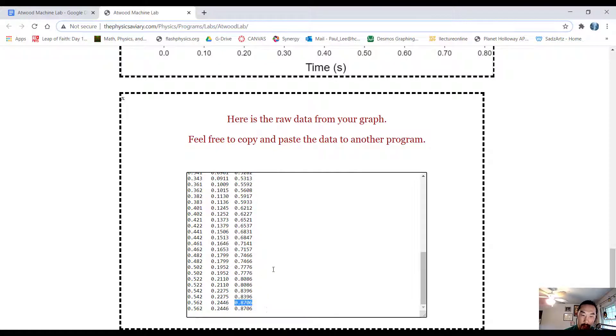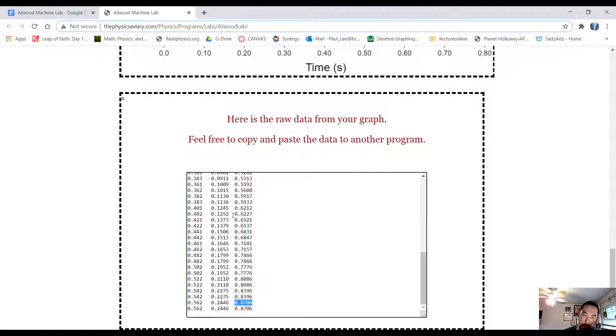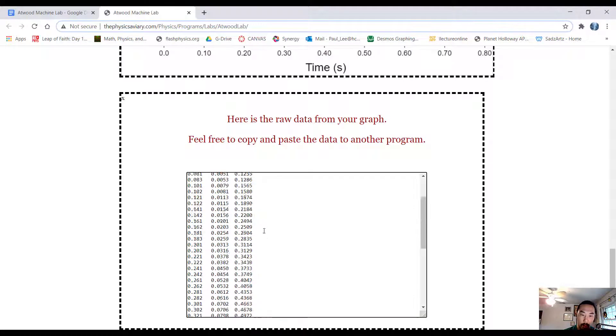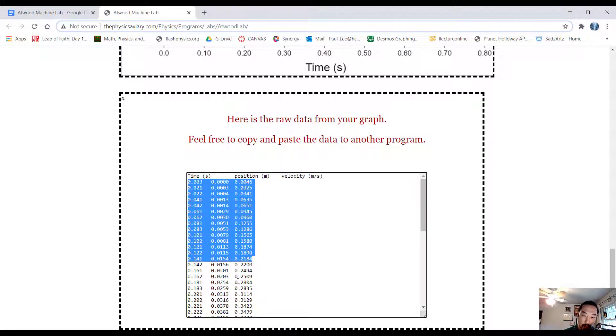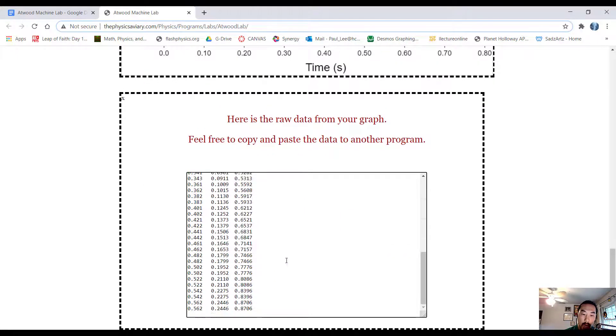A couple of things to know is that you're going to be picking different points throughout this data table. And when you pick them, make sure the data points are spread throughout. Okay, you don't want to pick the first ten right here. That's not going to give you that beautiful curve that they have. Alright, so just pick them throughout. And know that some of them, they do repeat. Like here. Okay, so you don't want any data points that repeat.